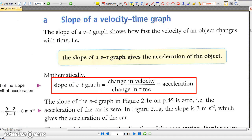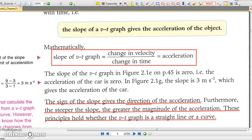Similarly, the sign of the slope also tells the direction of acceleration. A positive slope means the velocity is increasing, while a negative slope means the velocity is decreasing, and therefore, a deceleration.